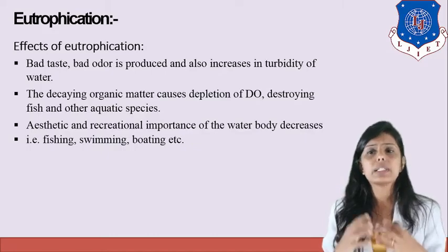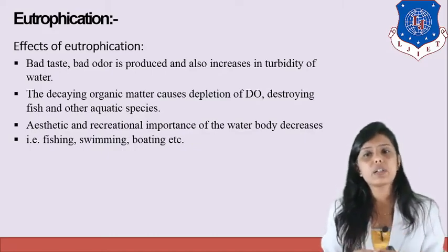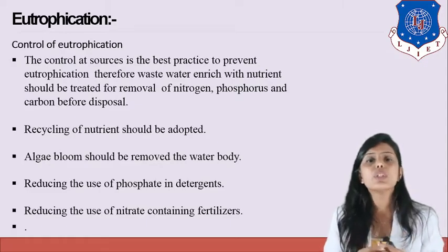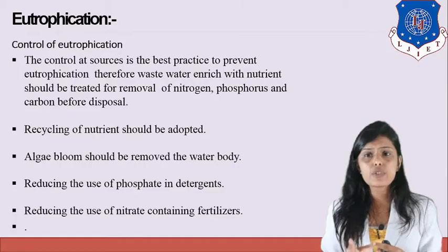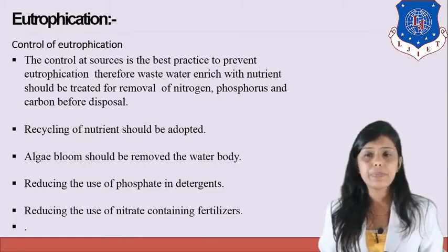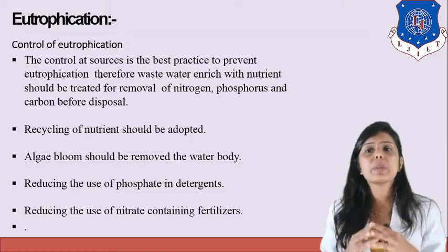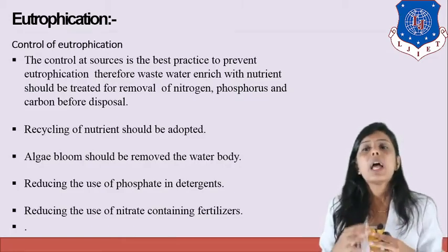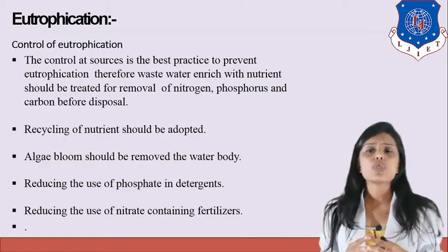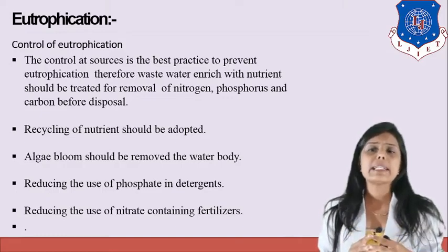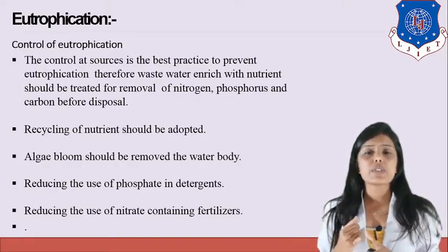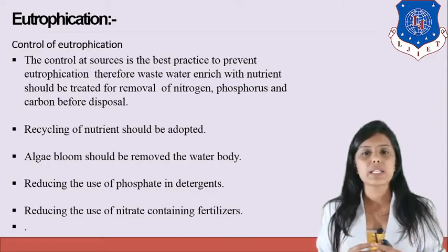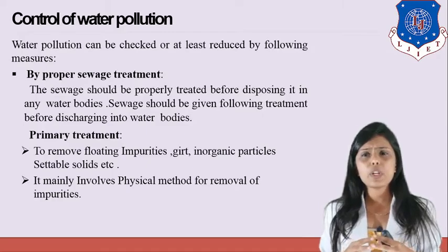Bad taste and bad odor are produced, turbidity in water increases, and decaying organic matter causes depletion of dissolved oxygen, destroying fish and other aquatic species. Aesthetic and recreational importance of the water body decreases. Eutrophication can be controlled by treating wastewater enriched with nutrients for removal of nitrogen, phosphorus, and carbon before disposal. Recycling of nutrients should be adopted, algae blooms should be removed from the water body, and use of phosphate in detergents and nitrate-containing fertilizers should be reduced.